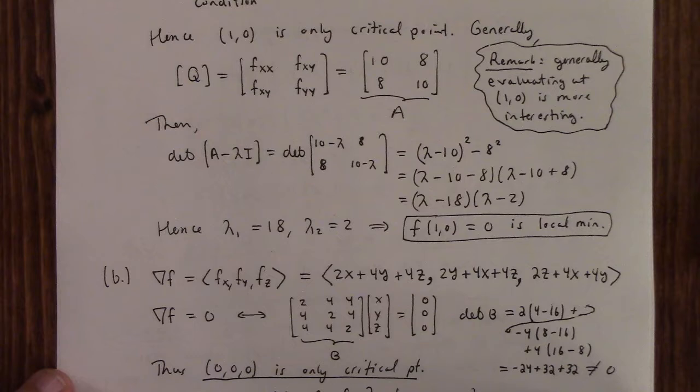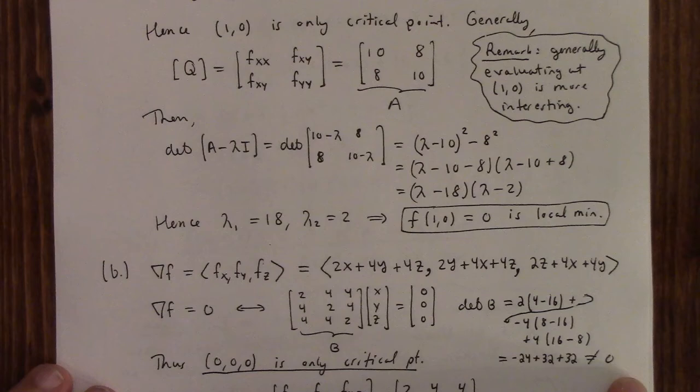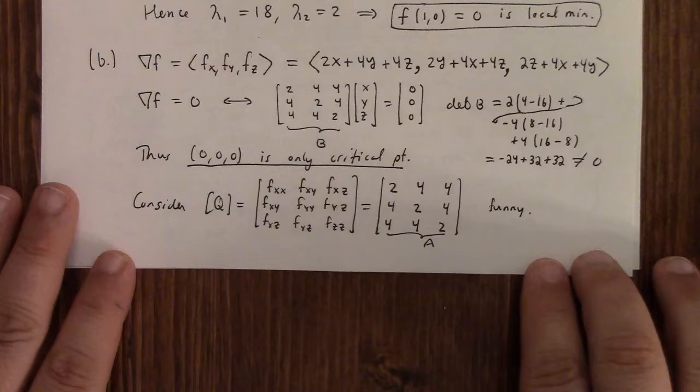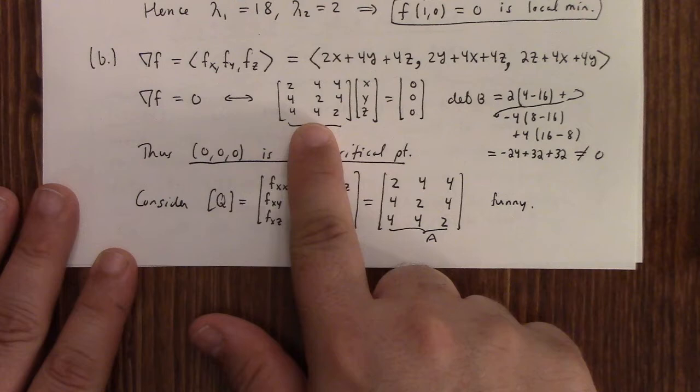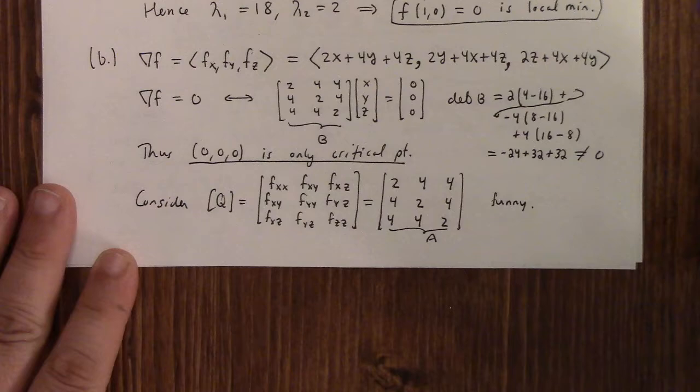This next one has only the origin as its critical point. So you can look at the matrix of second derivatives. Sorry if I'm out of frame here. The origin is the only critical point because the gradient of f being zero implies just zero. The matrix is non-singular, its determinant is non-zero, which means that the only solution of this is the zero solution.